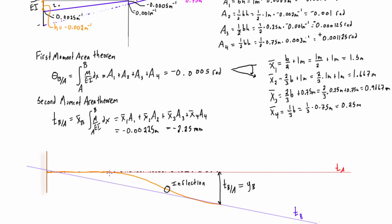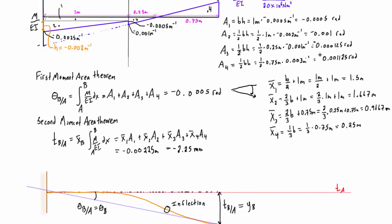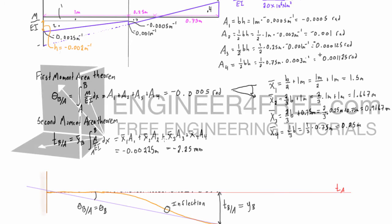Because tangent A is horizontal, the angle formed between the two tangents is theta B with respect to A, which equals theta B — the actual slope at point B. So by picking points A and B at each end of the beam and applying the first and second moment area theorems to the M over EI diagram, we find the end slope of the beam and the end deflection of the beam directly.